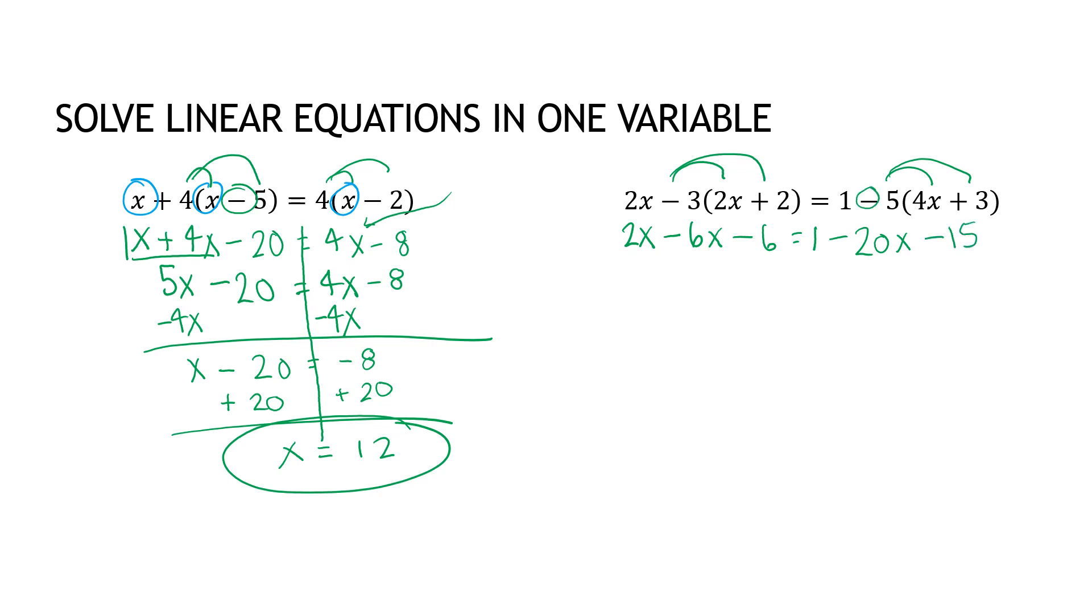The most common mistake is people who forget to distribute that negative. Again, before I start adding and subtracting from one side or the other, I need to combine like terms. On the left side, 2x and minus 6x combine to minus 4x. On the right side, I have negative 20x, but then I have a positive 1 and a minus 15, which gives me negative 14.